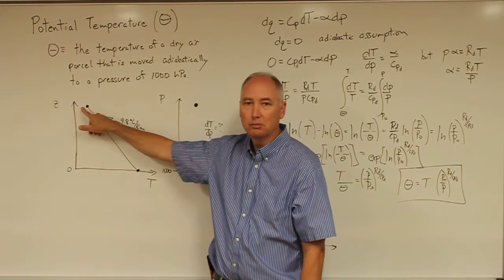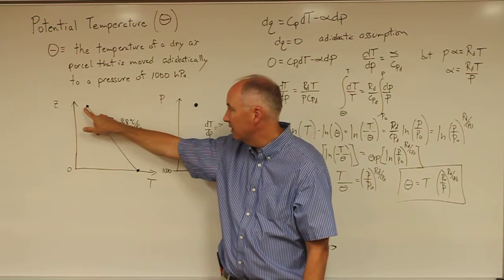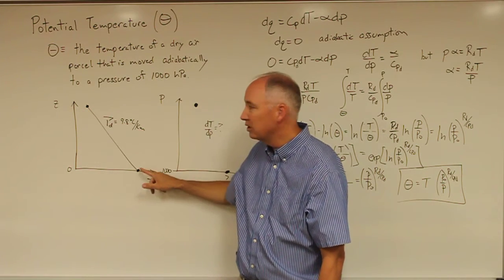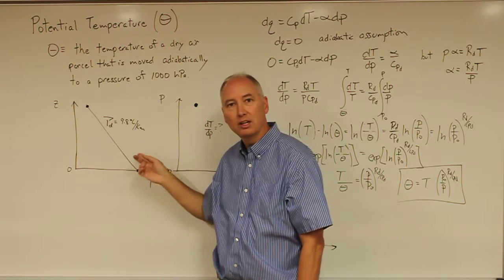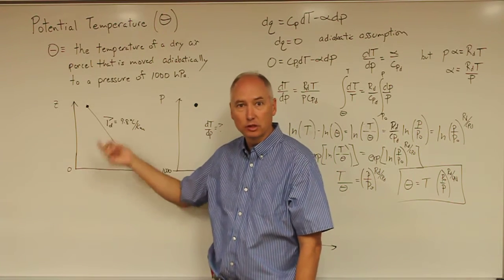Alternatively, if you take an air parcel at altitude and cause it to decrease in altitude, its temperature will increase at a rate of 9.8 degrees Celsius per kilometer. And that's a reversible process.